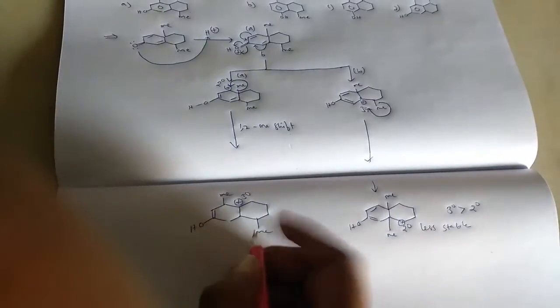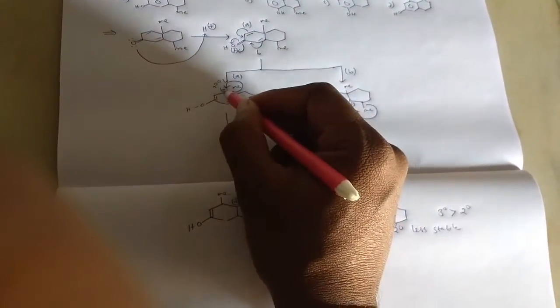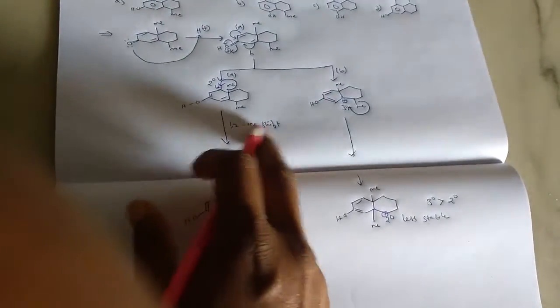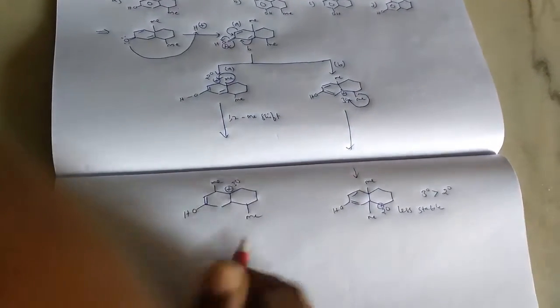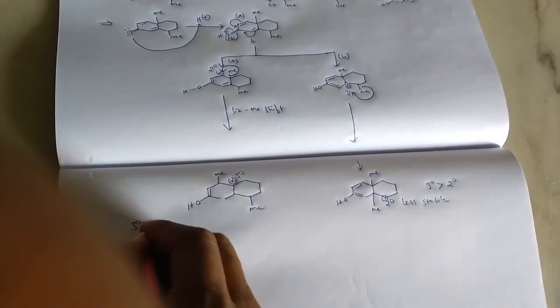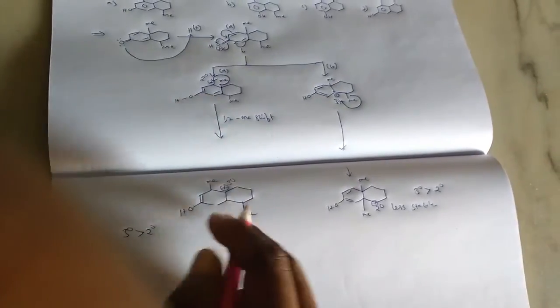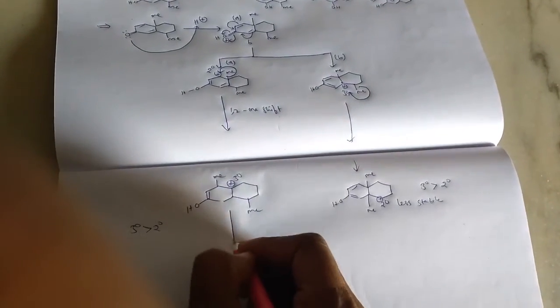And if you go for the first A pathway, then formation from secondary carbocation on one-two methyl shift, we are getting tertiary carbocation. So tertiary carbocation is more stable when you compare with the secondary carbocation. That's why this is the possibility of our reaction.